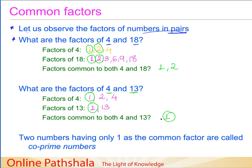This is a very interesting case. We found that for a set of two numbers, the only factor that is common is 1. In mathematics, there is a special term for these types of numbers which have only 1 as a common factor. These numbers are called co-prime numbers.